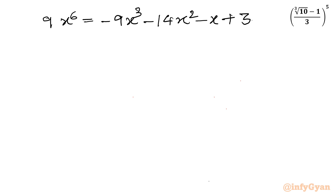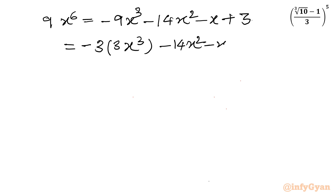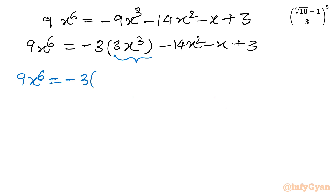Now x cube is there again. I can see minus 3 times 3x cube, minus 14x square, minus x plus 3. The left hand side is 9x power 6. We need to put the value of 3x cube again directly. So 9x power 6 equal to minus 3 times (1 minus x minus 3x square), then minus 14x square, minus x plus 3.